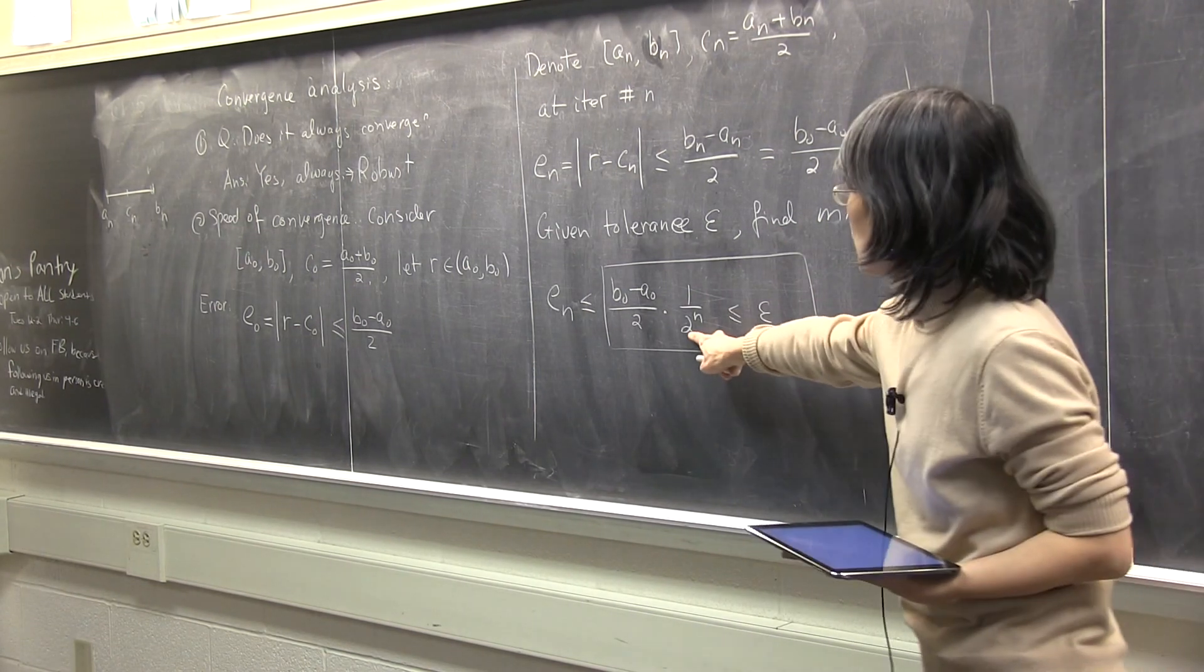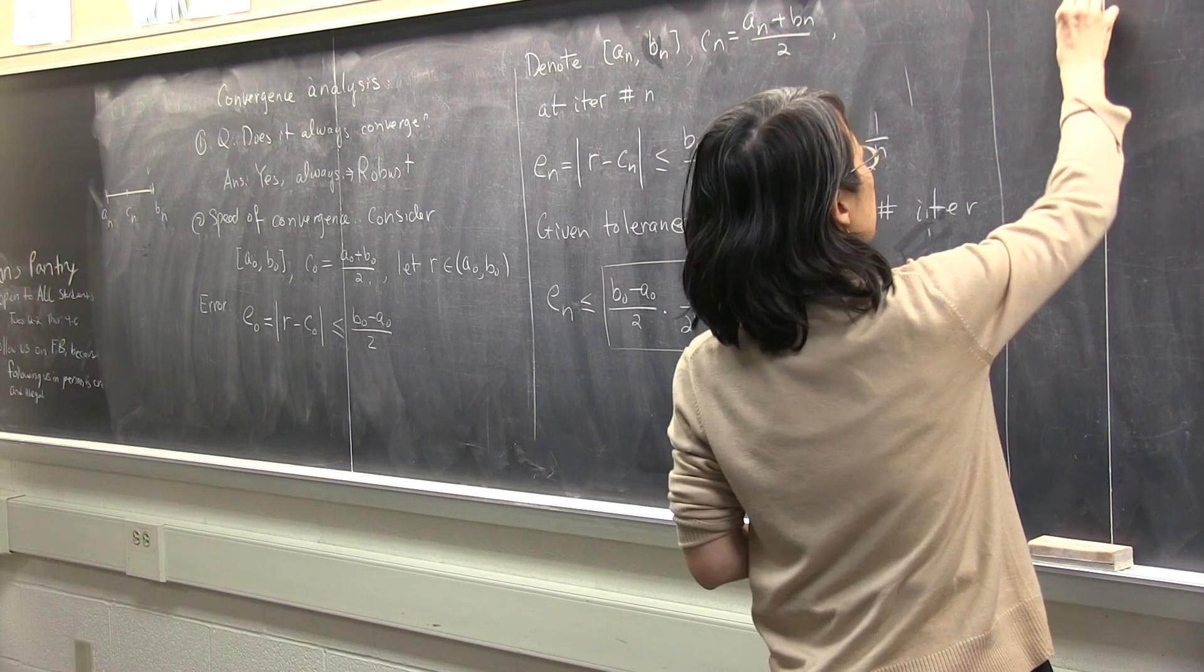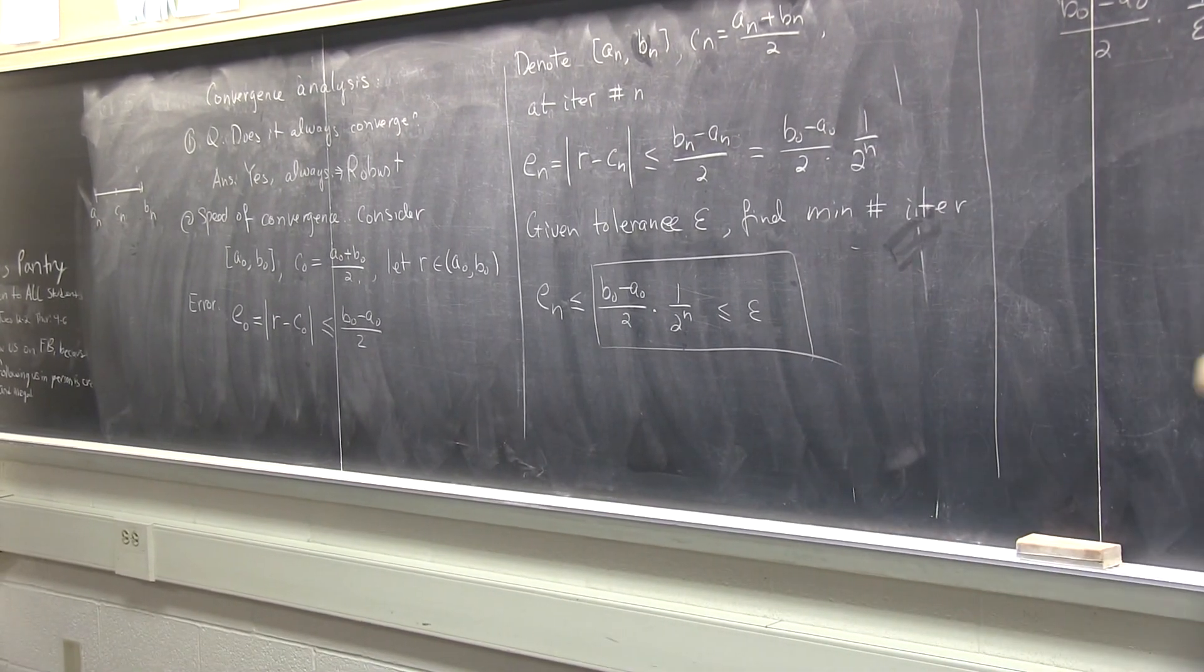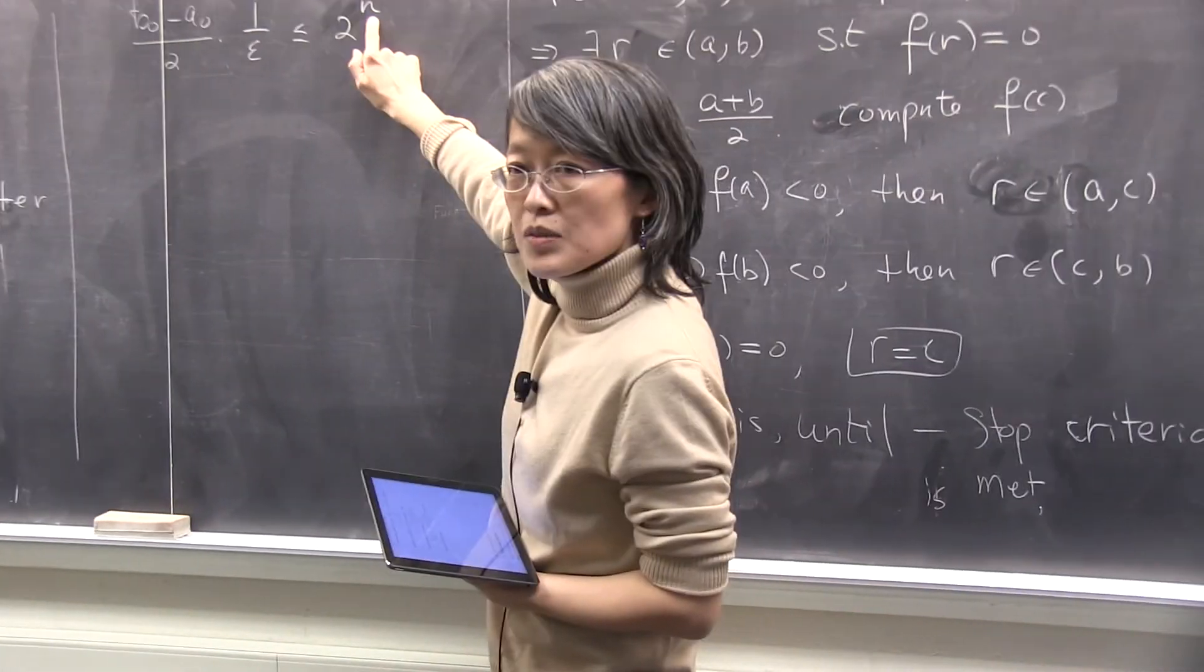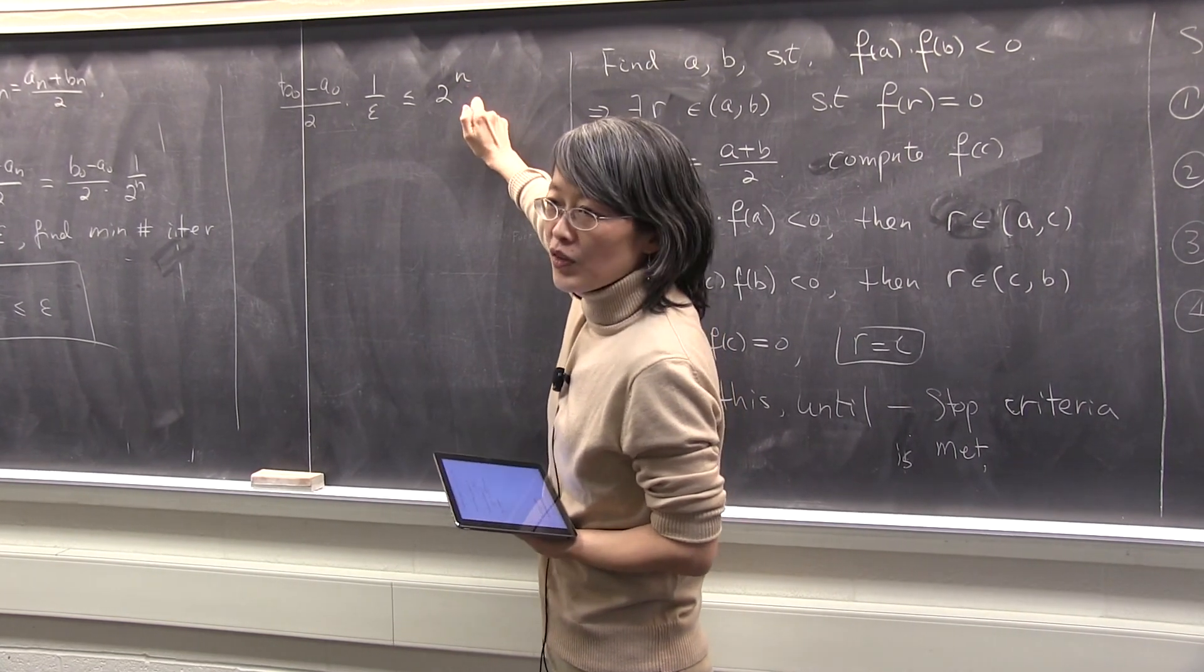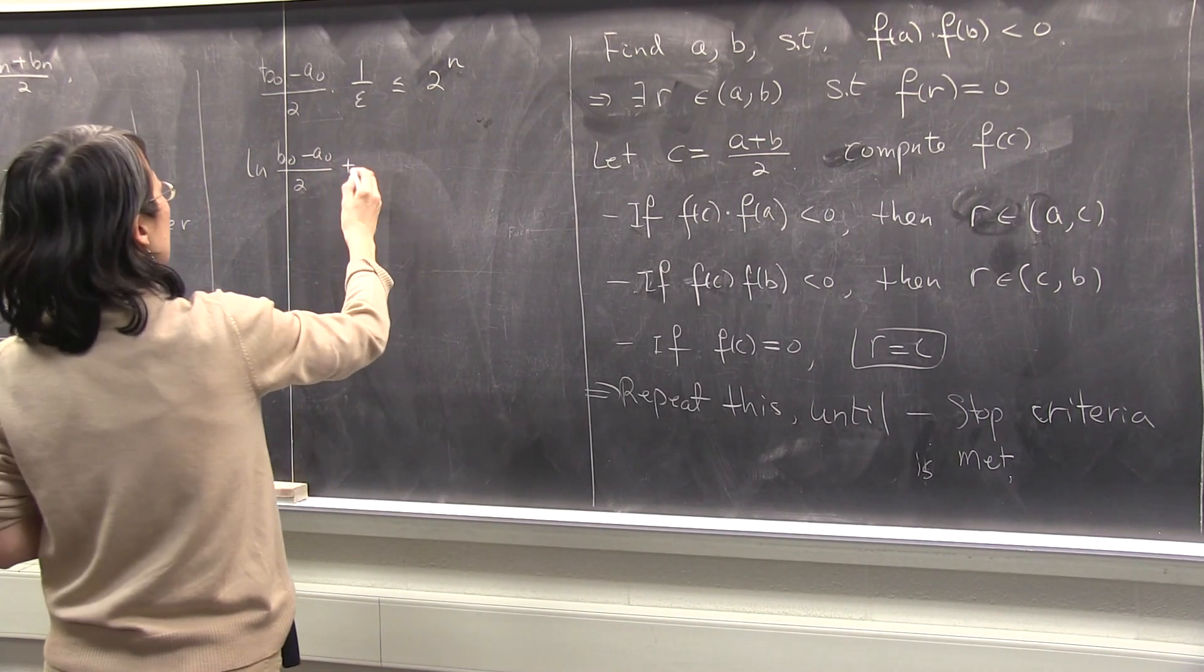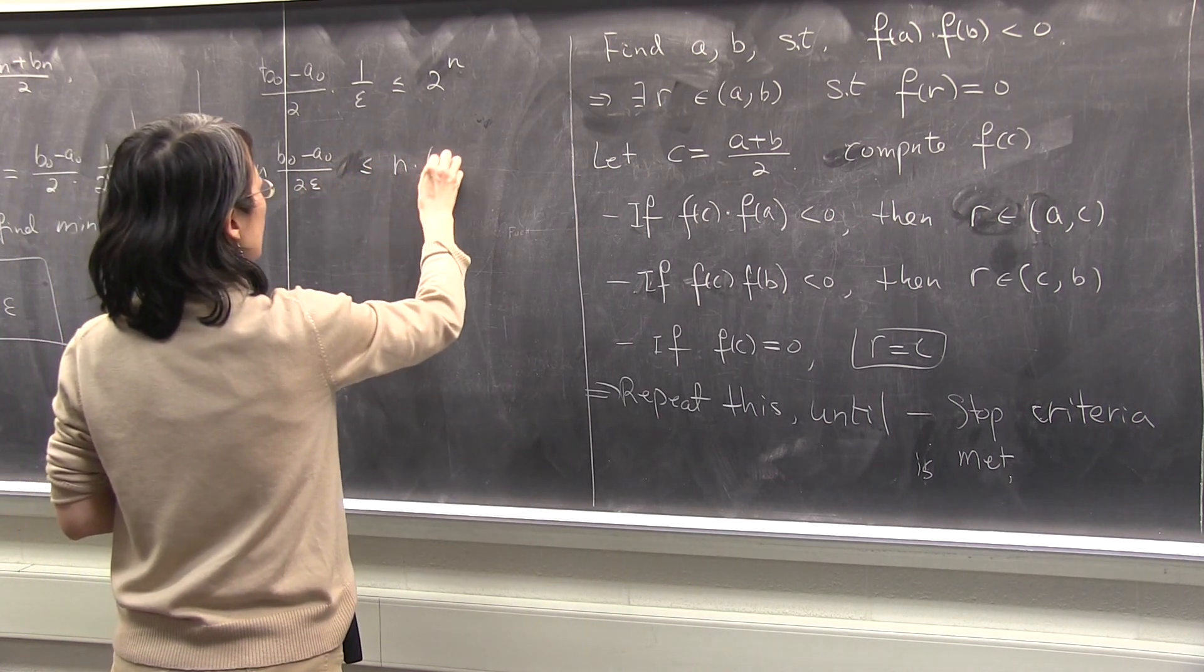I could move the 2 n over and move the epsilon down. Can I do that? Let's do that. So I have b zero minus a zero over 2 times 1 over epsilon shall be less than 2 to the power n. So how can I get a hold on the n, which is in the exponent? What would I do to get it out of the exponent? You take the natural log, right? Any log will work. Let's do the natural one. If I do the natural log, ln b zero minus a zero over 2 plus, wow, I don't have to do that. Let's just put all that in together less than n times ln of 2.